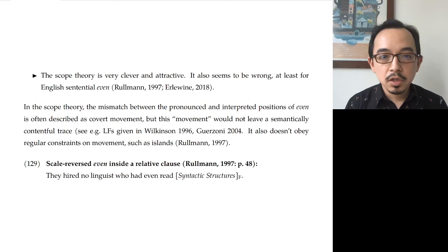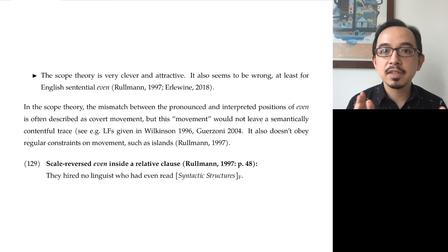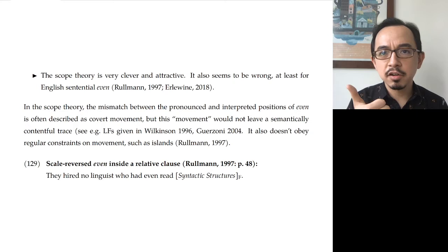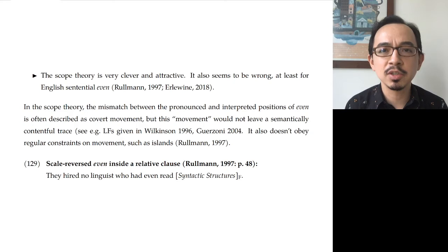First, this is a criticism of Rullmann's: in the scope theory, the mismatch between the pronounced and interpreted positions of even is sometimes described as a covert movement. But it doesn't seem to be the kind of covert movement we're otherwise familiar with. For one thing, there is a problem of whether it actually leaves an interpretable trace or not — in most works in this literature there isn't such a thing, so it's a strange kind of movement.